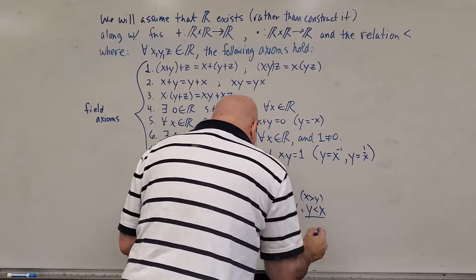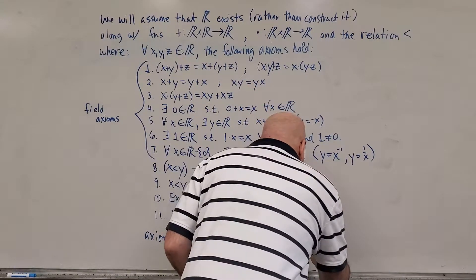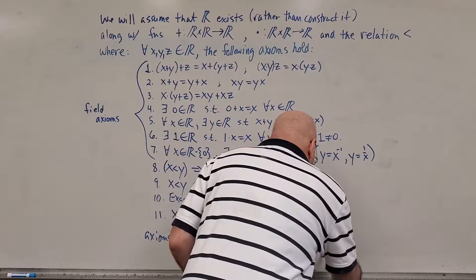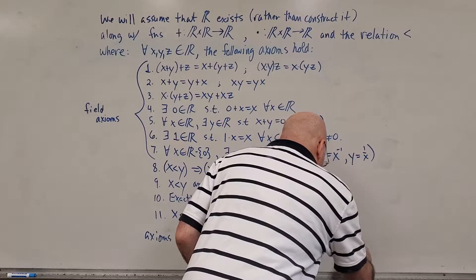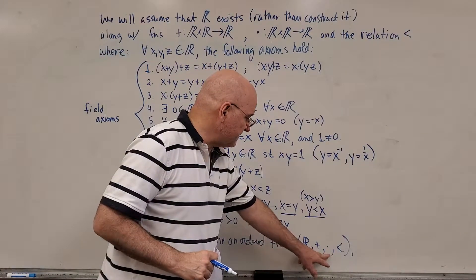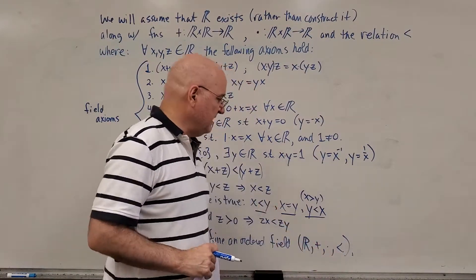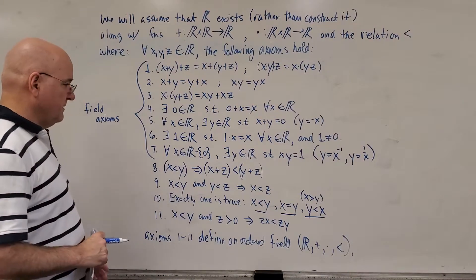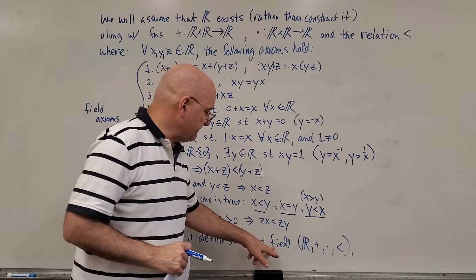Ordered field. And I'm going to write it as the quadruple. Like that. This is the set. These are the two operations we defined. And that's the inequality. The inequality is what defines the order.